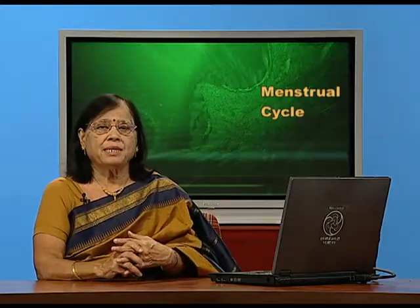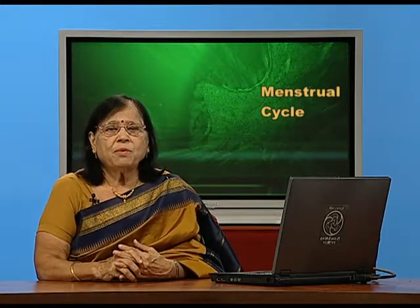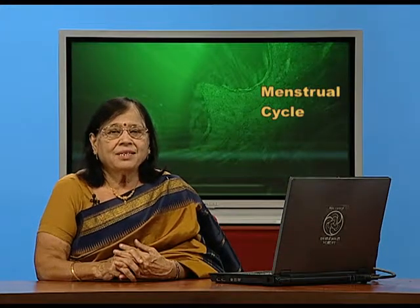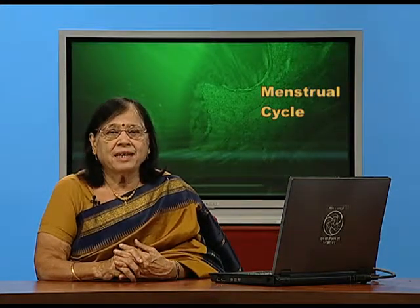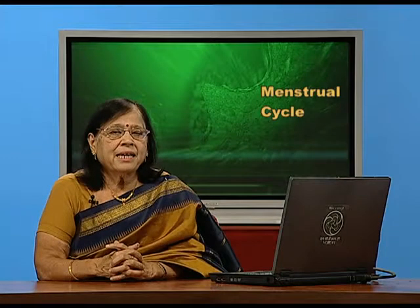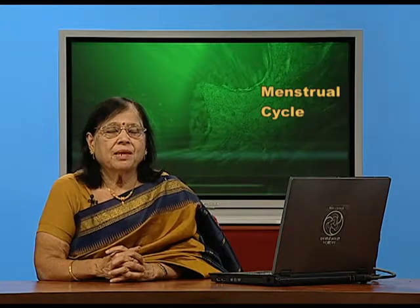Before I go into detail, you should also be familiar with another word: the estrous cycle. The estrous cycle is a four-day reproductive cycle found in rats, whereas the menstrual cycle, found in primates, is of 28 days duration. Here is the diagrammatic representation of the menstrual cycle.